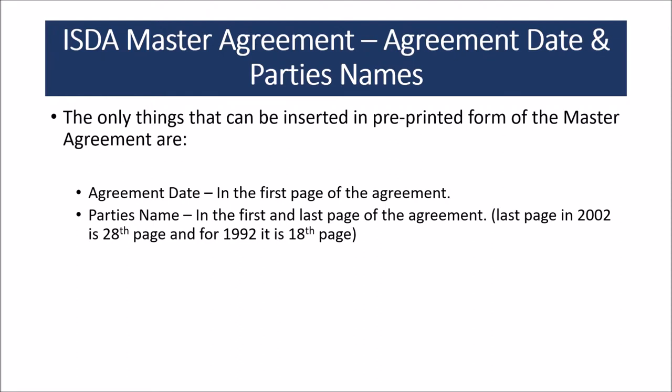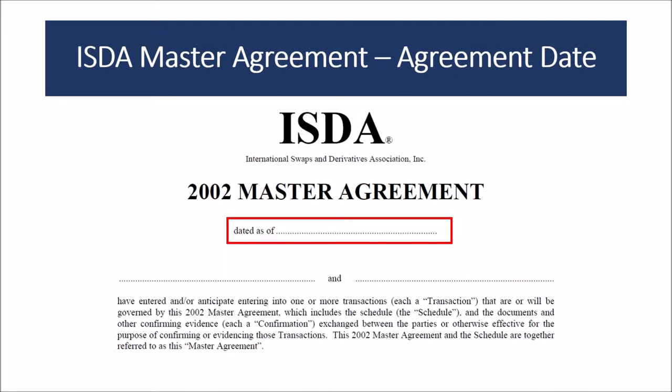As mentioned in previous videos, the ISDA Master Agreement is a pre-printed form and nothing can be changed or altered. If parties want to alter the terms, they can do so by electing the terms in the schedule. The only information that can be inserted in the master agreement is the agreement date on the first page and the names of the parties on the first and last page. The last page of the 2002 agreement is page 28, and in the 1992 agreement it is page 18.